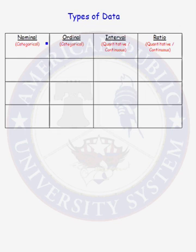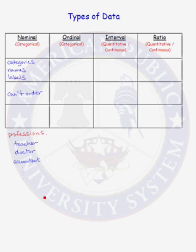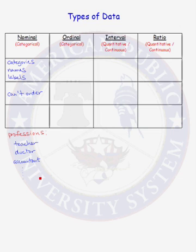Let's first talk in detail about the nominal data type. A nominal data type is data that can be put into categories, names, or labels. There is no natural ordering to nominal data. An example of a variable that is nominal is professions: teacher, doctor, accountant, pharmacist, truck driver. These are labels or categories and there is no natural ordering to the types of professions. Therefore, this data type is nominal.